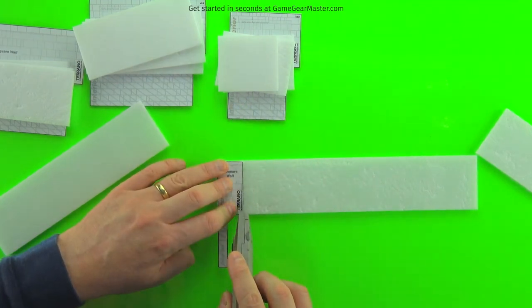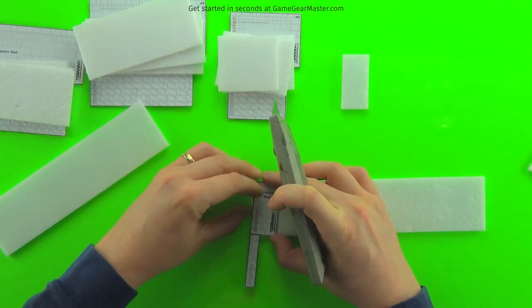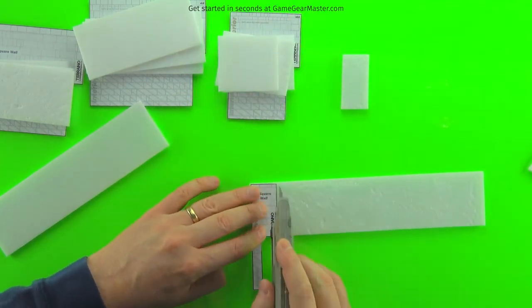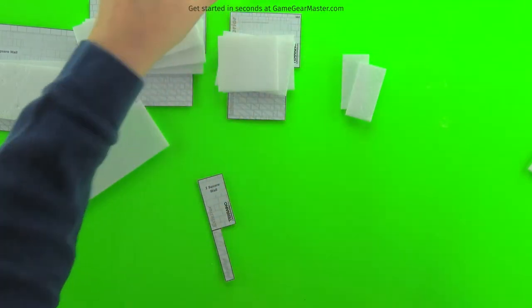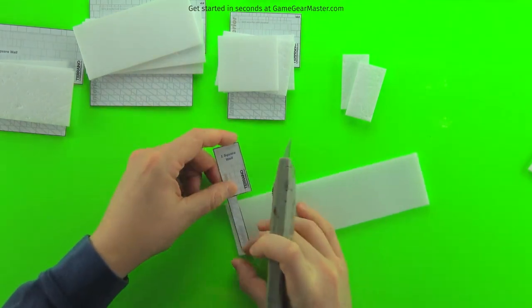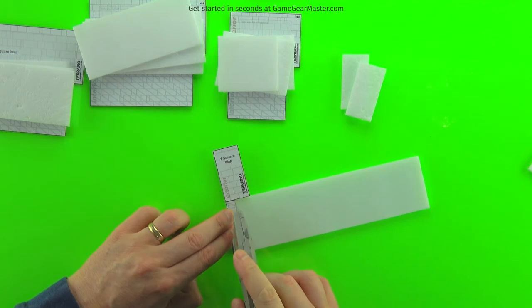I'm just scoring along the edge of the template and then snapping off the pieces that I need. And on this small one square wide wall, please be careful when cutting that interior piece. There's not a lot of things to hold onto there just because it is such a narrow little piece. So please watch your fingers.